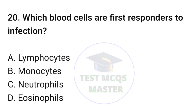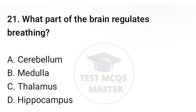Question number twenty: which blood cells are first responders to infection? The correct option is C, neutrophils. Question number twenty-one: what part of the brain regulates breathing? The correct option is B, medulla.